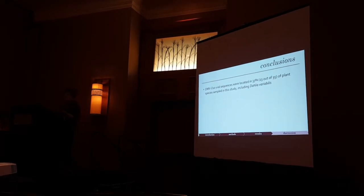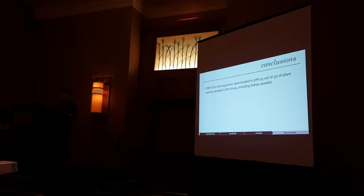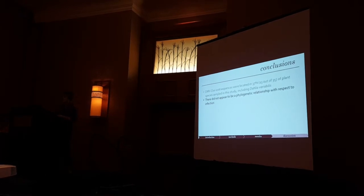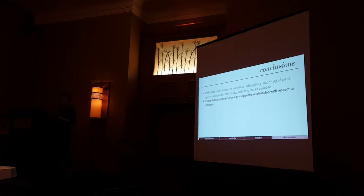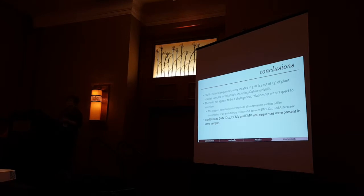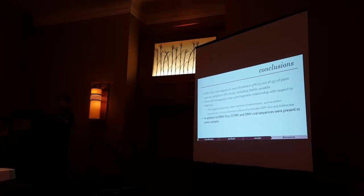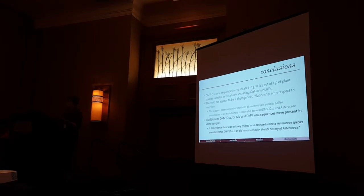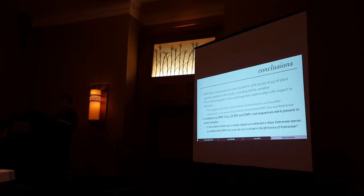In conclusion: DMVD-10 viral sequences showed up in about 37% of our samples — 13 out of 35 plant species, including Dahlia. However, there did not appear to be any phylogenetic relationship relative to infection, as other genera also showed DMVD-10 viral fragments. This potentially suggests pollen transmission or a co-evolutionary relationship between the virus and other plants. Additionally, fragments or whole genes of Dahlia common mosaic virus and Dahlia mosaic virus also appeared in our samples, further supporting a co-evolutionary relationship between plant viruses and Asteraceae members.